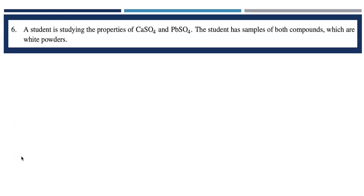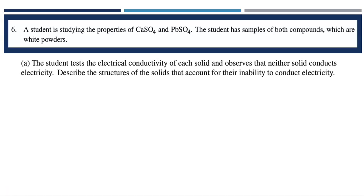A student is studying the properties of calcium sulfate and lead-to-sulfate. The student has samples of both compounds, which are white powders. Part A says, the student tests the electrical conductivity of each solid and observes that neither solid conducts electricity. Describe the structures of the solids that account for their inability to conduct electricity.